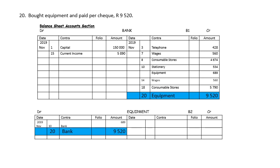On the 20th, we bought equipment and paid by cheque. If we buy equipment, money in the bank will decrease. Equipment will increase — both being assets. Every debit needs a credit. Equipment was debited, bank will be credited.